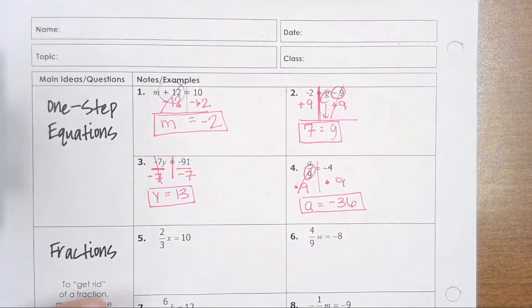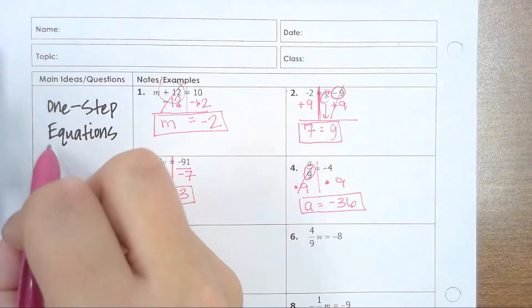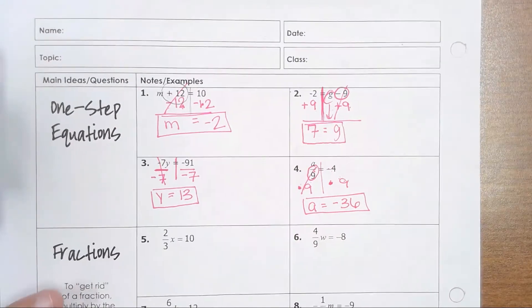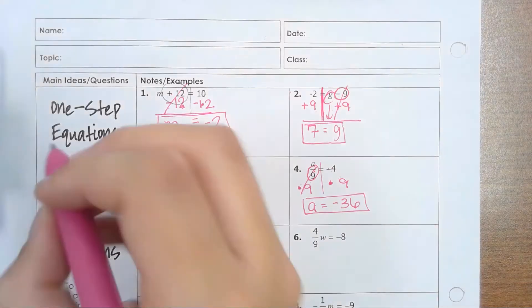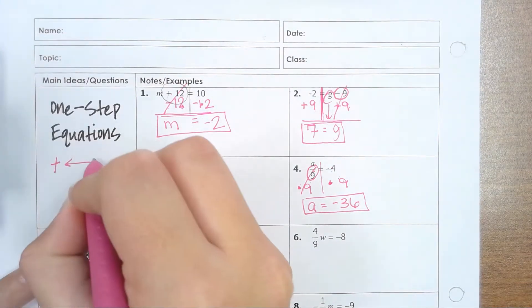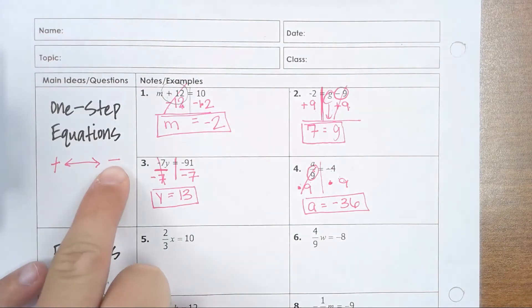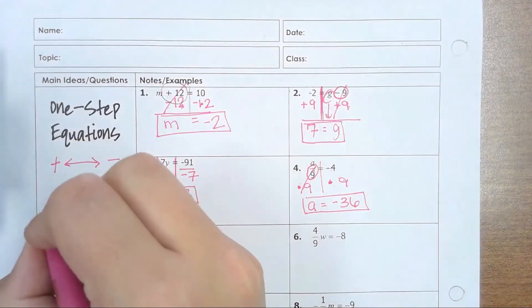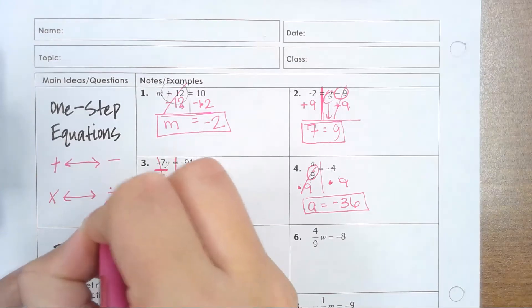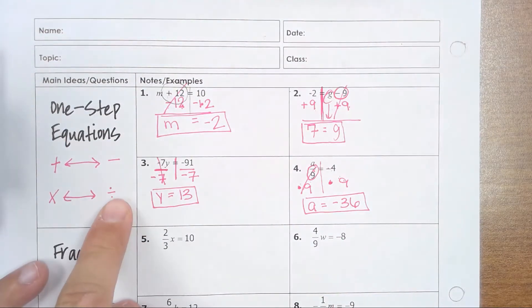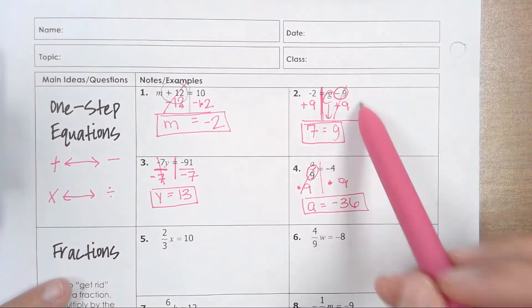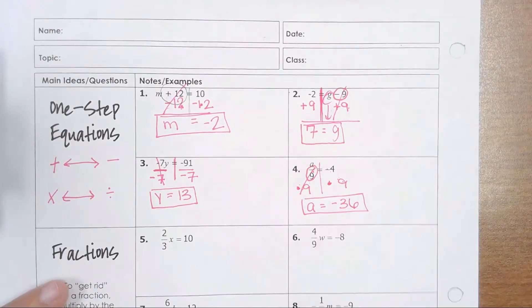The main thing to know: your goal is to get the variable by itself, even if it's on the right side. You have to move every other number on the same side as the variable by using inverse operations. If you are adding, the inverse is subtracting; if subtracting, the inverse is adding. Same with multiplying and dividing — opposite of multiplying is dividing, and opposite of dividing is multiplying. After that, just make sure you're showing your proper algebraic steps and getting your correct answer.